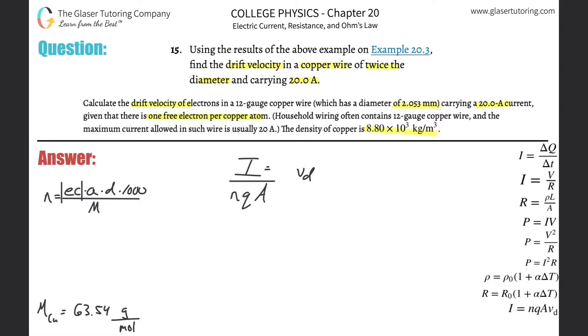And here's our equation for drift velocity. So I need to know three things. What's the current? Well, it told us in the problem 20 amps, so that's nice and easy. This is 20. So we're going to plug in this formula here. I explained this in the prior problem, so check out number 14. I'm going to run through this one a little faster.